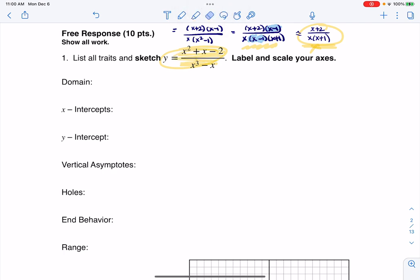So like I said, a lot of times I'll use the simplified version, but I will still account for the hole when I get to my traits. Now for domain, I actually do want to use the original version, because I want to look at all the places where my denominator was 0. So for my domain, I want to look for where my original denominator is 0, and I can see that's at x equaling 0, 1, and negative 1. So those are the three values that I need to boot from the domain.